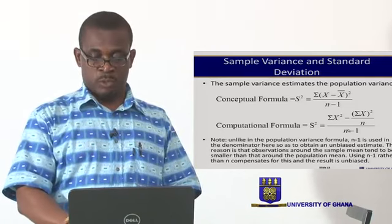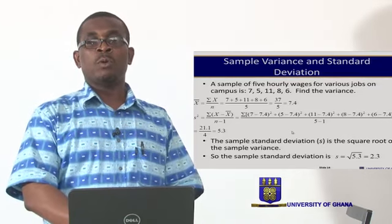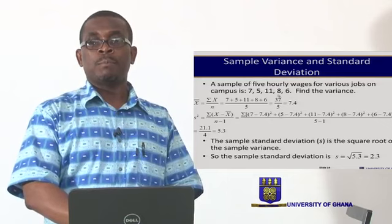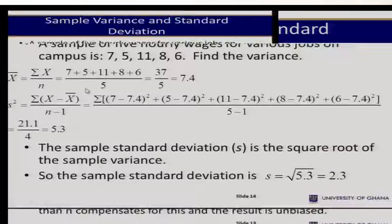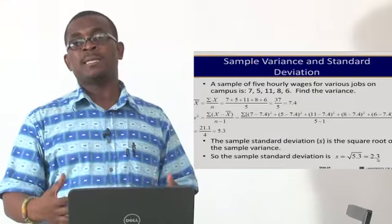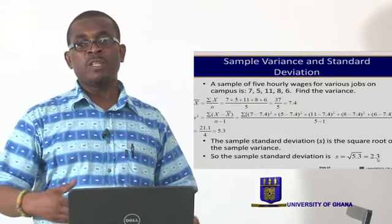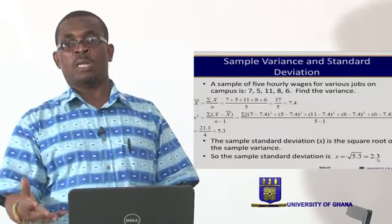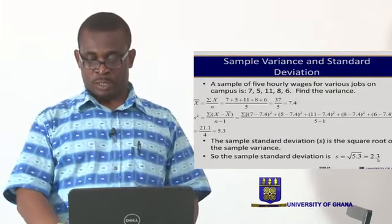As an example, consider a sample of five hourly wages for various jobs on a university campus. The sample mean is 7.4. Applying the sample variance formula gives us 5.3. The standard deviation is the square root of the variance, which is 2.3. This tells us that on average, the hourly wages differ by 2.3 dollars — or whatever monetary unit is being used — from the mean.